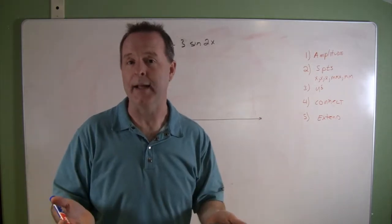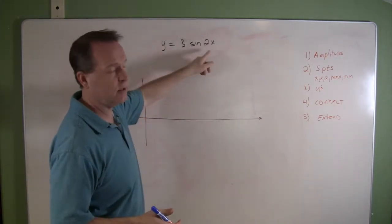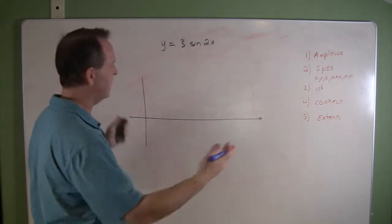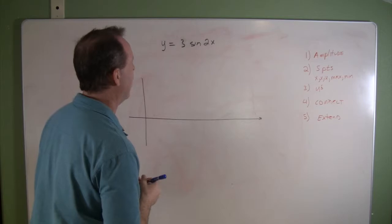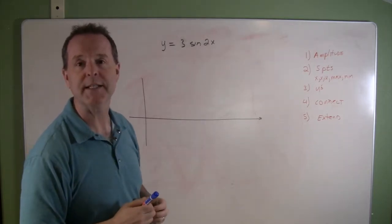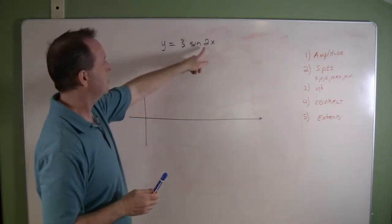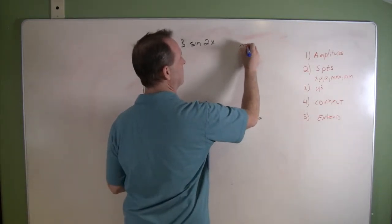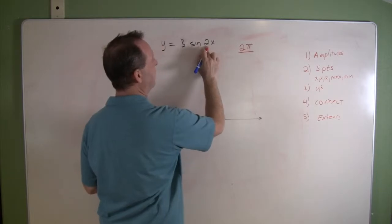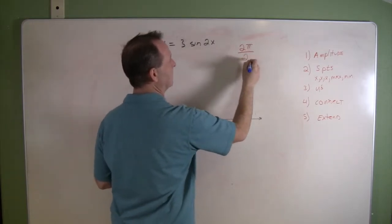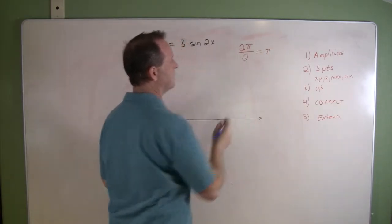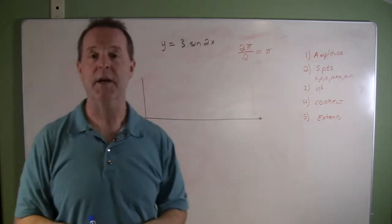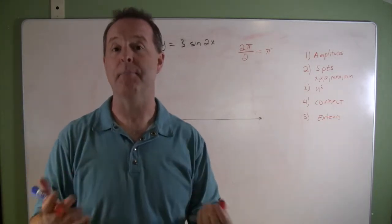So now what this is going to do is constrict and make our graph's frequency faster. What we'll do is we'll find its period, and its period is going to be discovered by taking 2π and dividing by this value. So this particular function of sine has a reoccurring pattern or repeats every π.